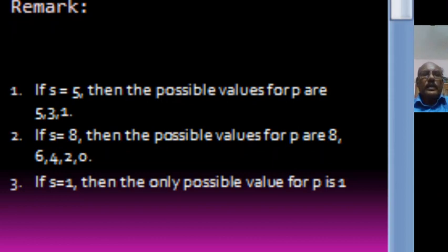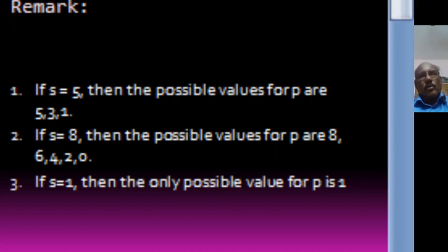If S is equal to 8, then the possible values for P are 8, 6, 4, 2, 0. When S is equal to 1, P is less than or equal to 1 and P is congruent to 1 modulo 2, so P equal to 1 is the only possible case. So when S equals 1, P equals 1.